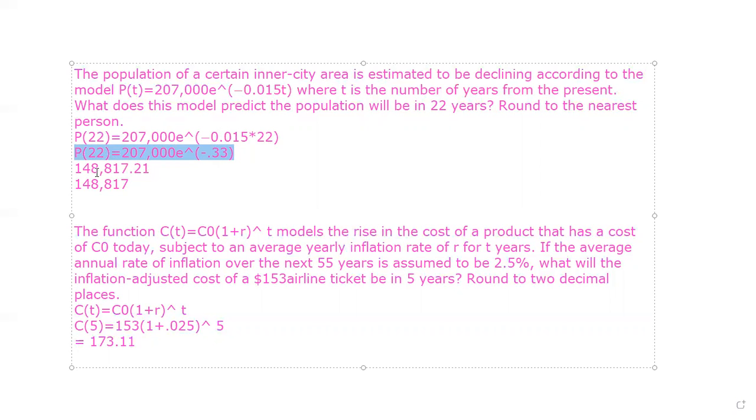And then when you plug it into your calculator, you should get 148,817.21 and then there's a whole bunch more numbers, but I just stopped it right there. The reason that I stopped it right there is because if you'll go back to the instructions, it says round to the nearest person. So remember we're talking about people here. You can't have 0.21 parts of a person.